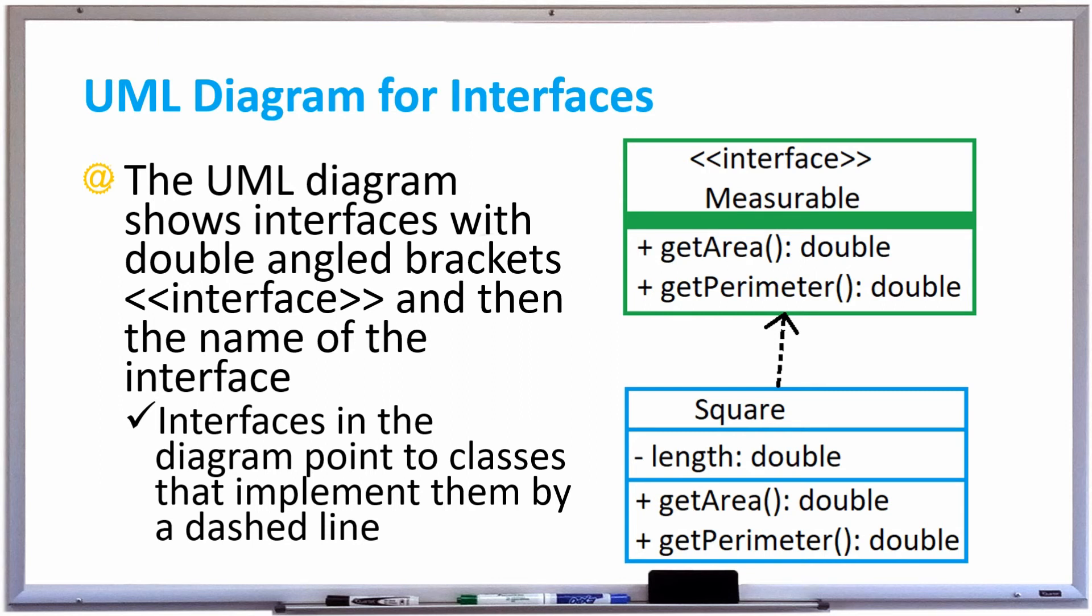Notice that there is a dashed or dotted line going from square to measurable meaning that square implements measurable. And that's basically all you have to do to depict interfaces in a UML diagram.